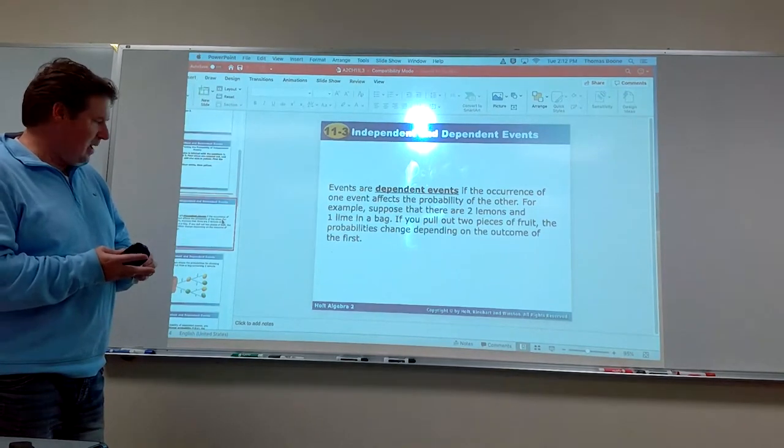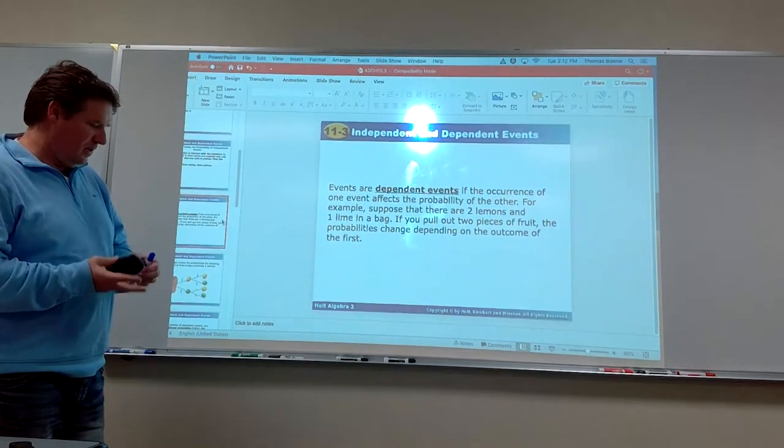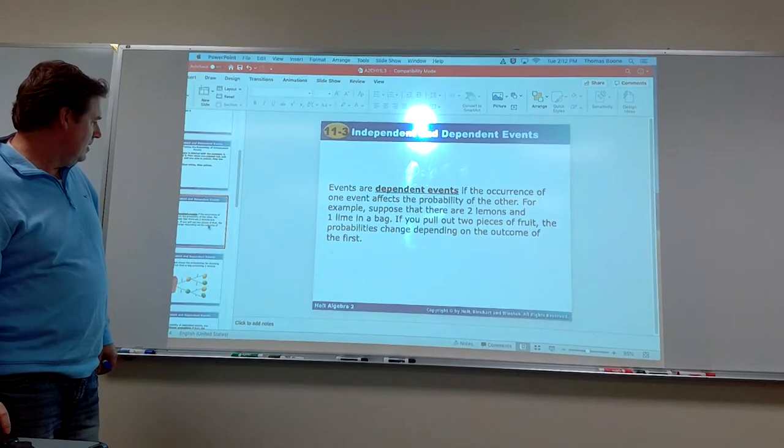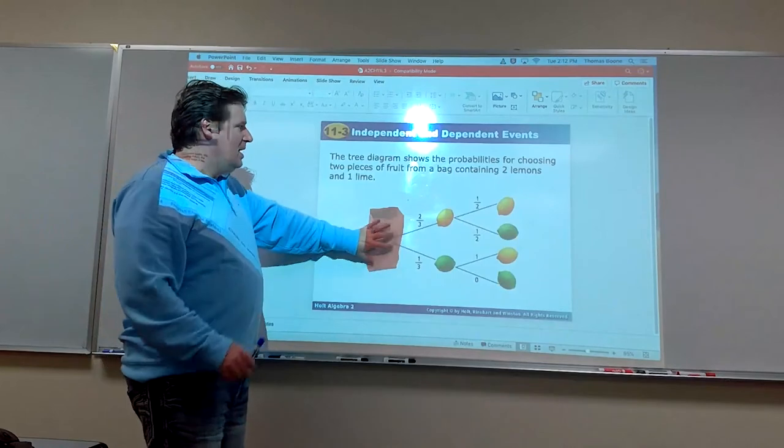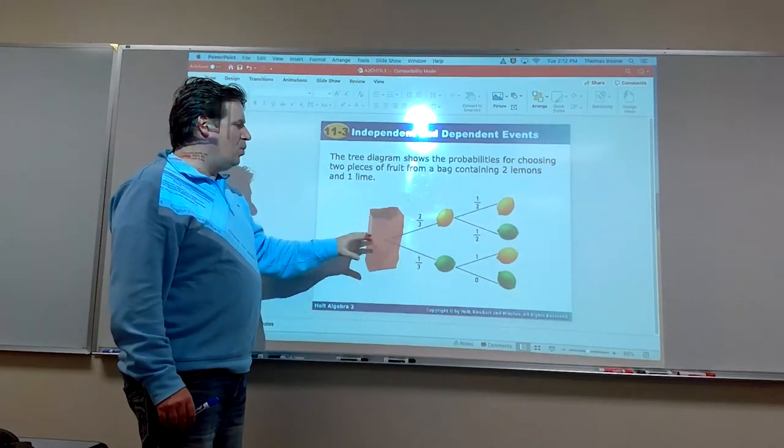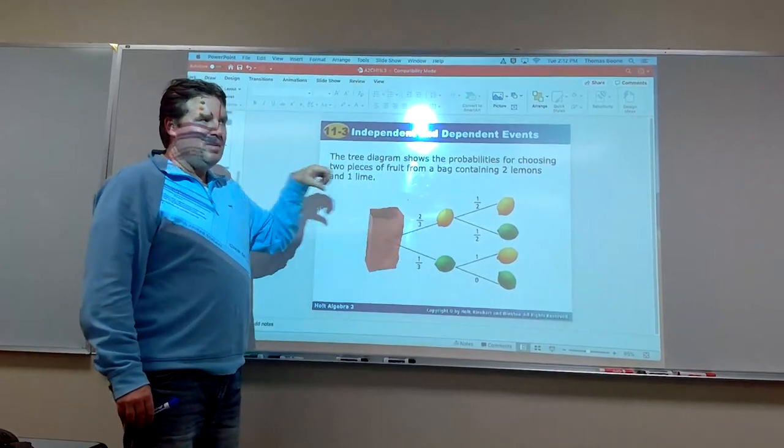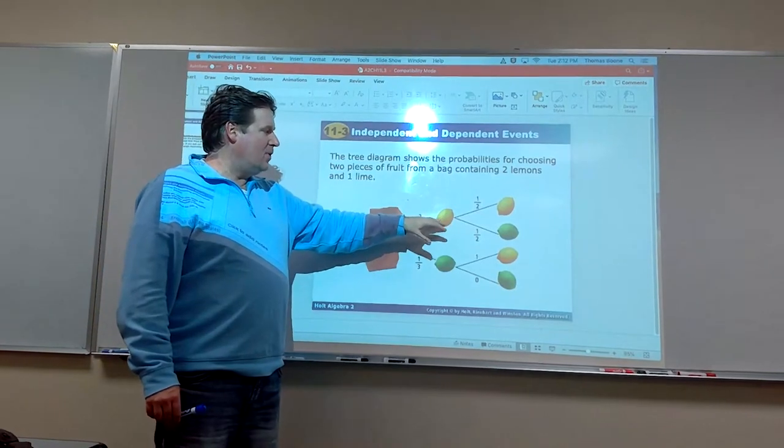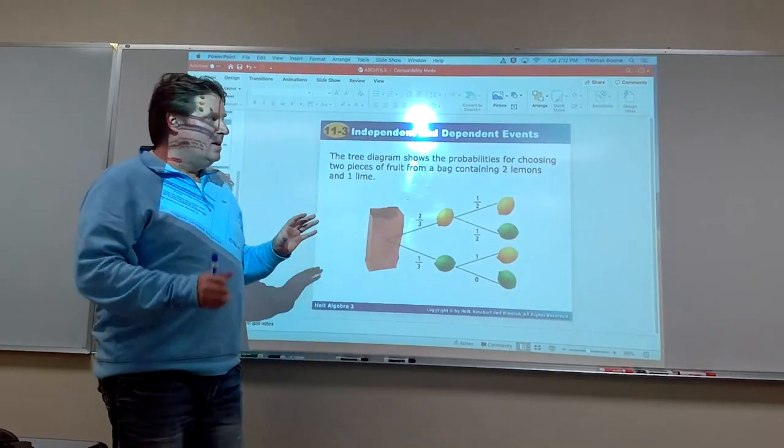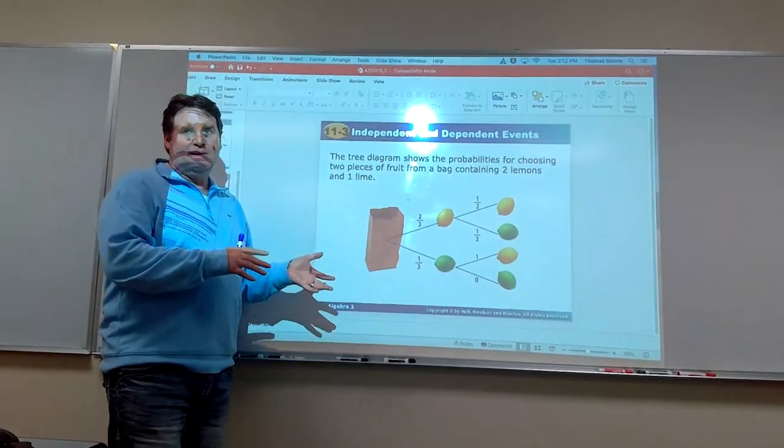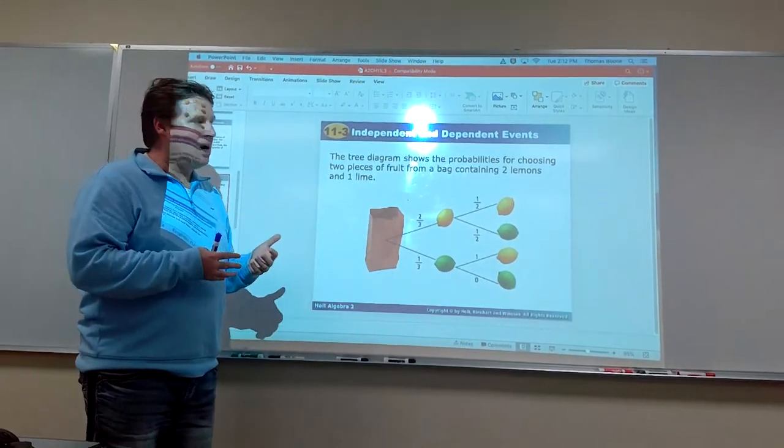So some examples of that. I thought this was a good example here. If I can get this working. There it is. This is a good example. I think this is a good picture. Those little tree diagrams we had before. In a bag, let's say we had two lemons and one lime. Well when I reach in and grab, you know, I have a 2 out of 3 chance of getting a lemon and a 1 out of 3 chance of getting a lime. Now if I don't put it back,